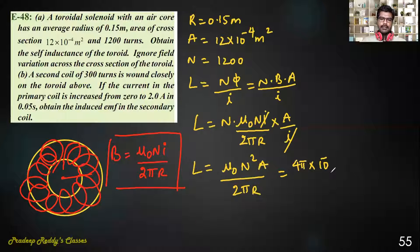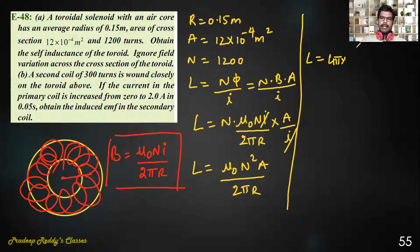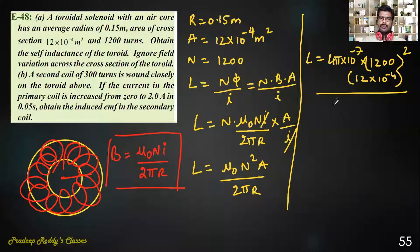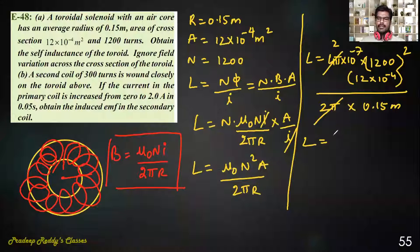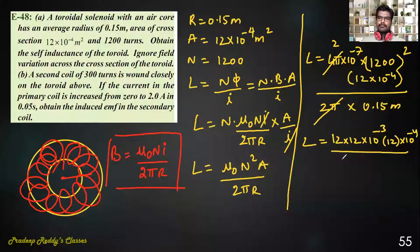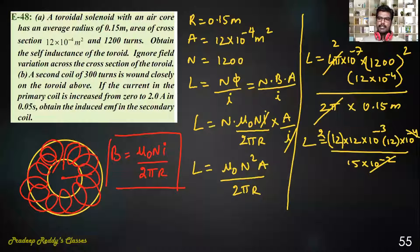Substituting values: L = 4π×10⁻⁷ × (1200)² × 12×10⁻⁴ / (2π × 0.15). The 2π cancels, leaving the numerical calculation with 12×12×10⁻³×10⁻⁴ in the numerator and 15×10⁻² in the denominator, yielding the self inductance of the toroid.